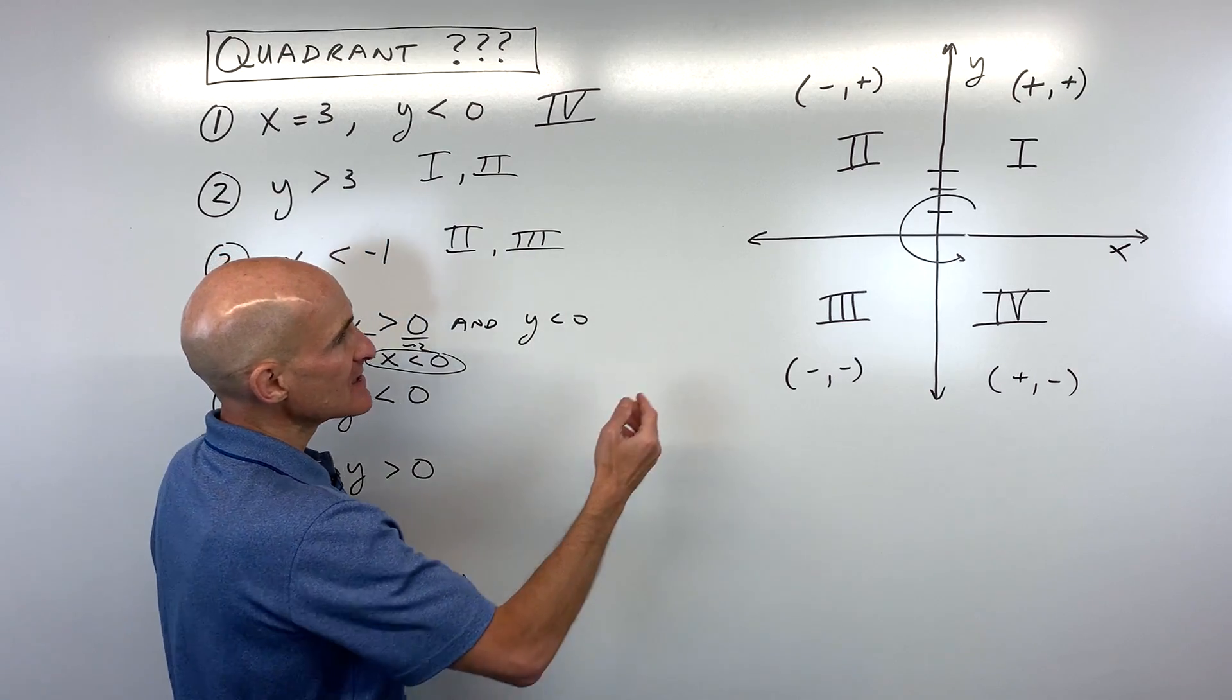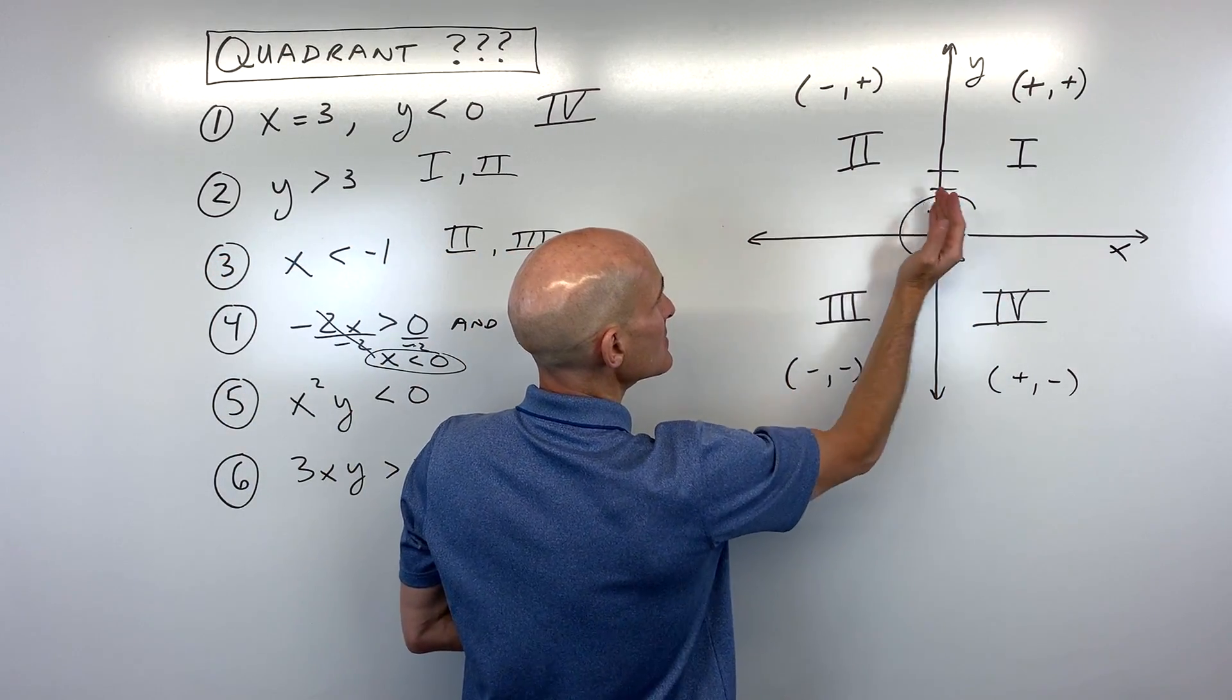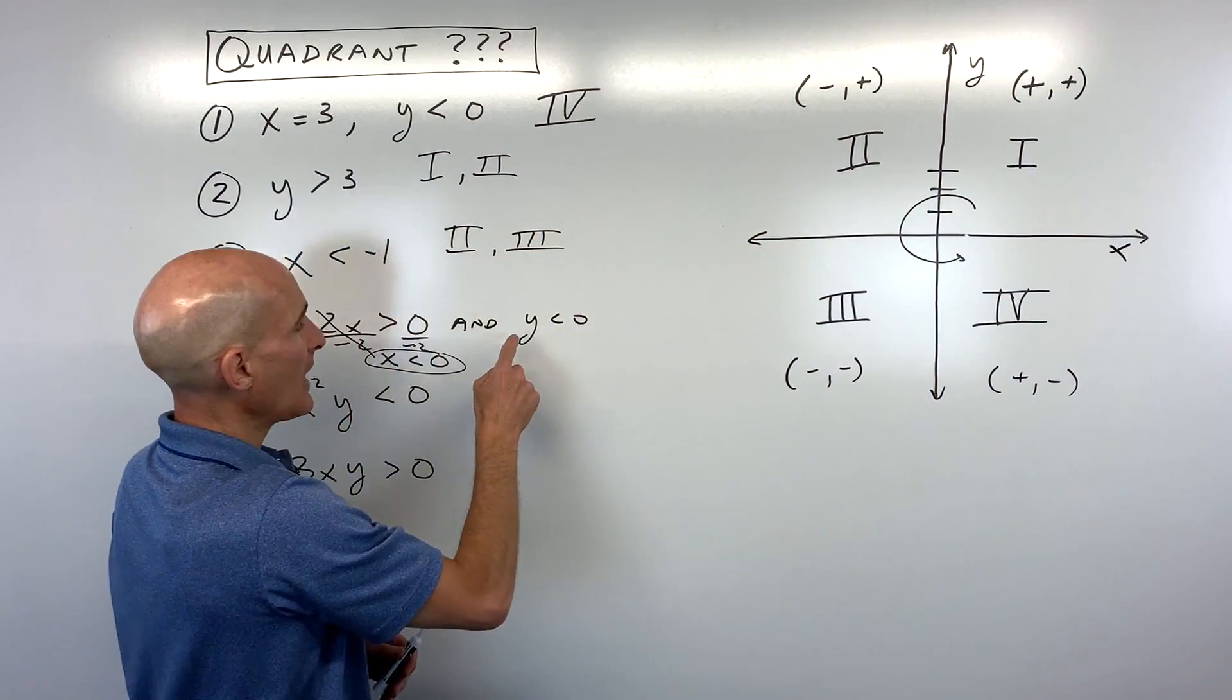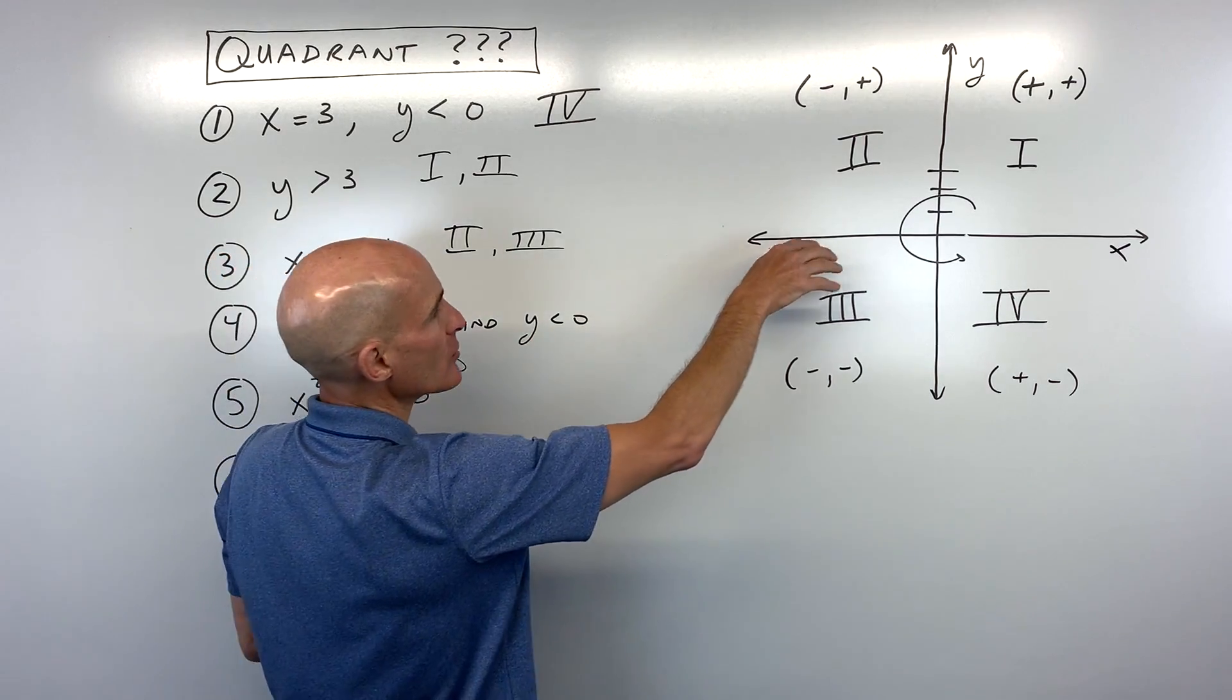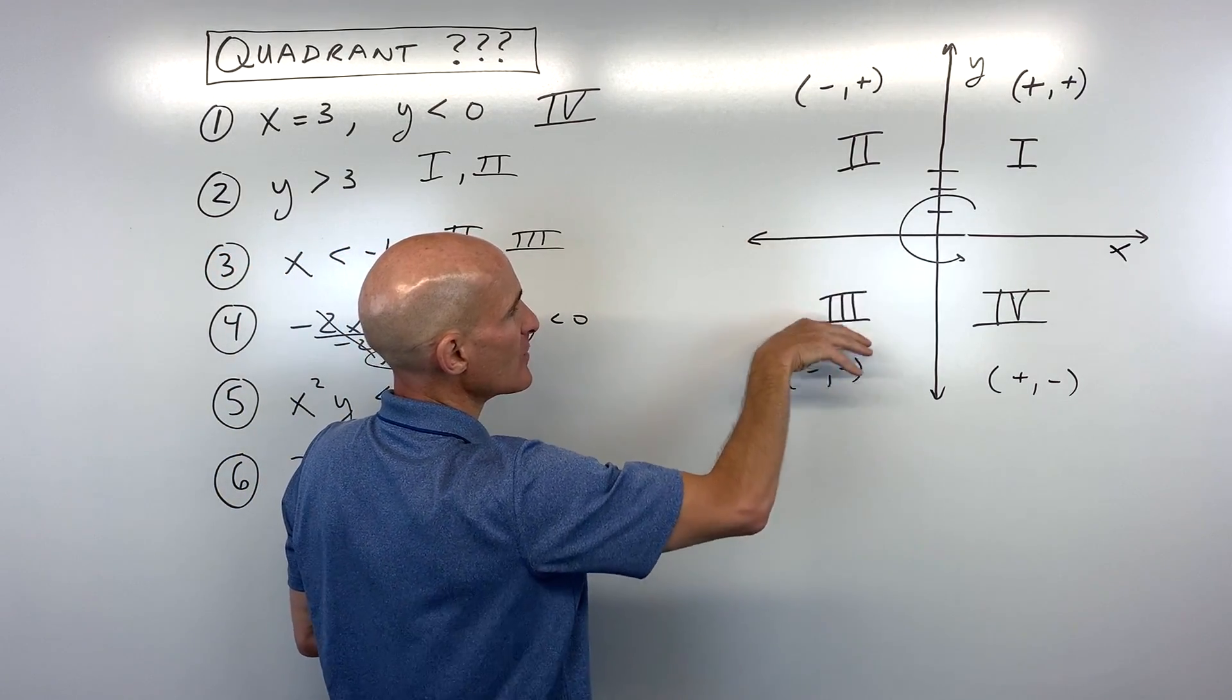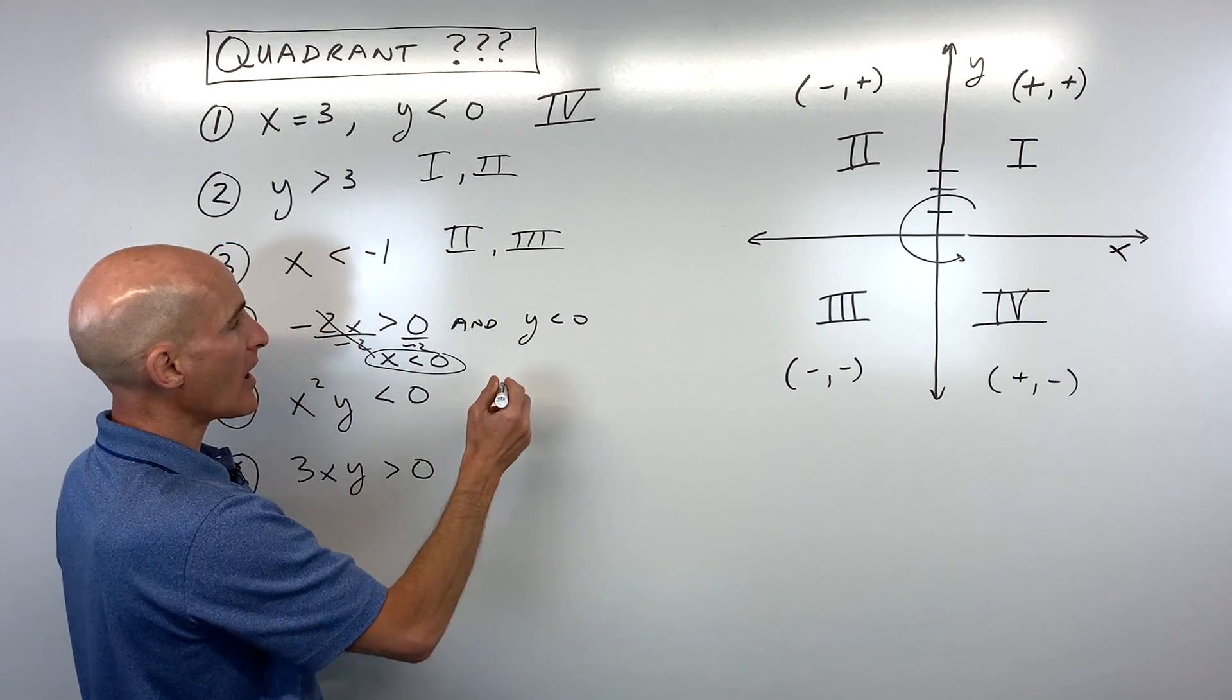Zero divided by negative two is still going to be zero. So x has to be less than zero. So it means we're going to be to the left of the y-axis. And y is less than zero. So y is less than zero. That's negative. We're going to be below the x-axis. That's going to put us in the third quadrant.